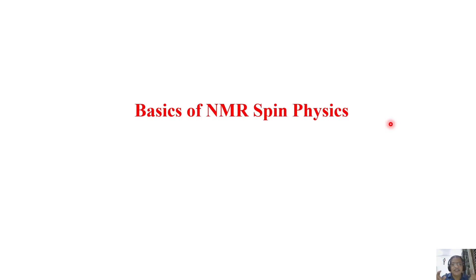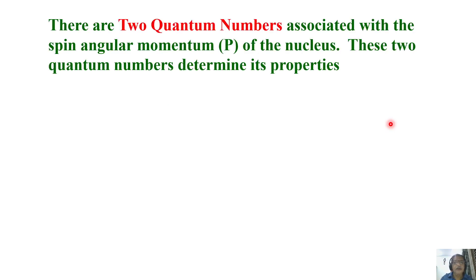Now if you have to understand NMR spectroscopy, you must know the basics of NMR physics - without that you will not understand NMR. You need to understand some mathematics and spin physics, but I will try to minimize the mathematics as much as possible and not frighten you with high-level mathematics. Whatever is required I will make as simple as possible. Now, the angular momentum P of the nucleus has two quantum numbers associated with it.